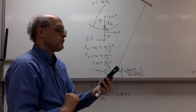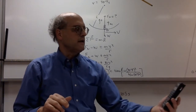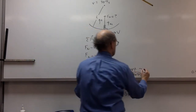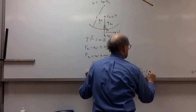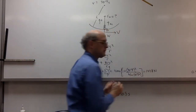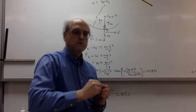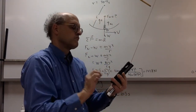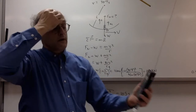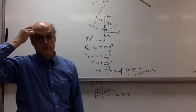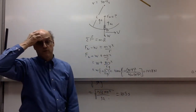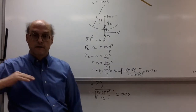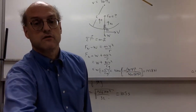I'm getting 1,428 Newtons for his apparent weight — about 3.6 g's. So he feels about 3.6 times his actual weight at the bottom of the dip on the coaster.